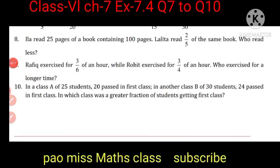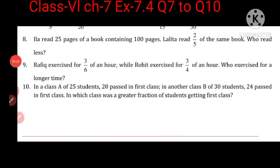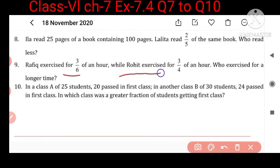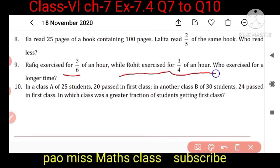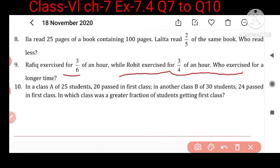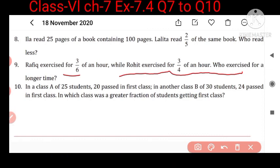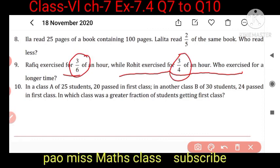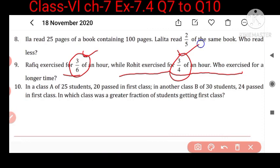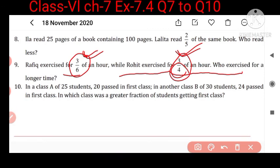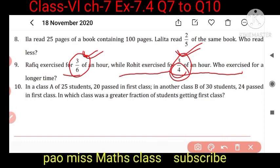Question 9: Rafiq exercised for 3 upon 6 of an hour while Rohit exercised for 3 upon 4 of an hour. Who exercised for a longer time? These are unlike terms but their numerators are equal. When numerators are equal, the smaller denominator gives the greater fraction. So Rohit, with denominator 4, has the greater fraction.